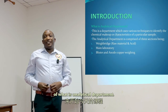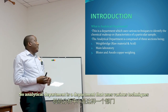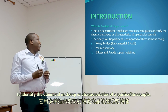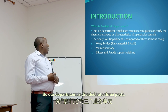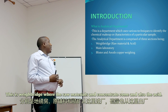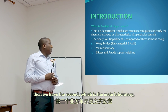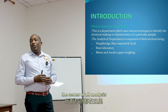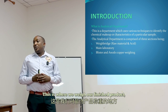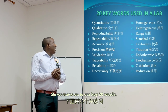We'll start our presentation with a small introduction of what the Analytical Department is. The Analytical Department uses various techniques to identify the chemical makeup or characteristics of a particular sample. Our department is divided into three parts: the weigh bridge, where raw materials, concentrate, and acid come in; the main laboratory, the center of all analysis; and the blister and anode copper wing, where we weigh our finished product — copper, copper anodes, and copper blisters.